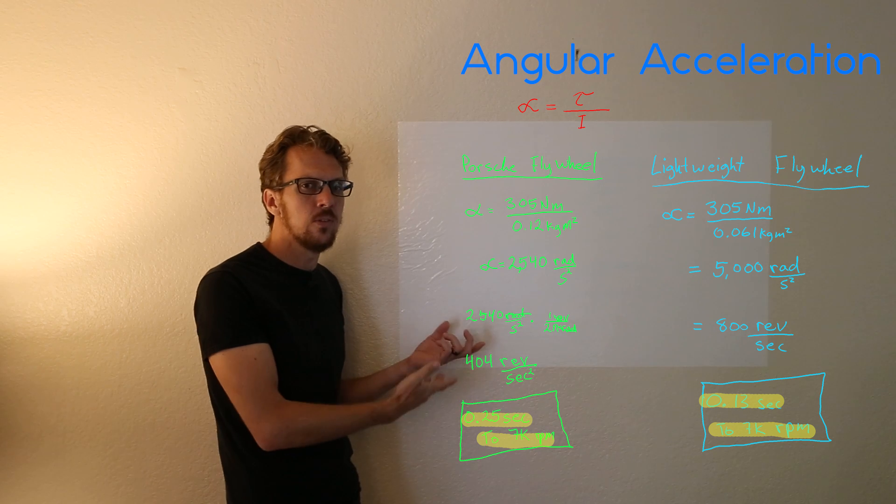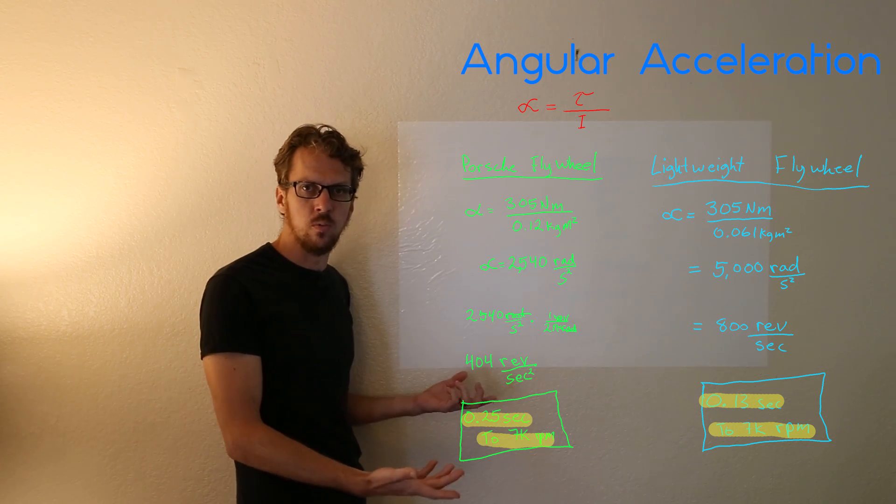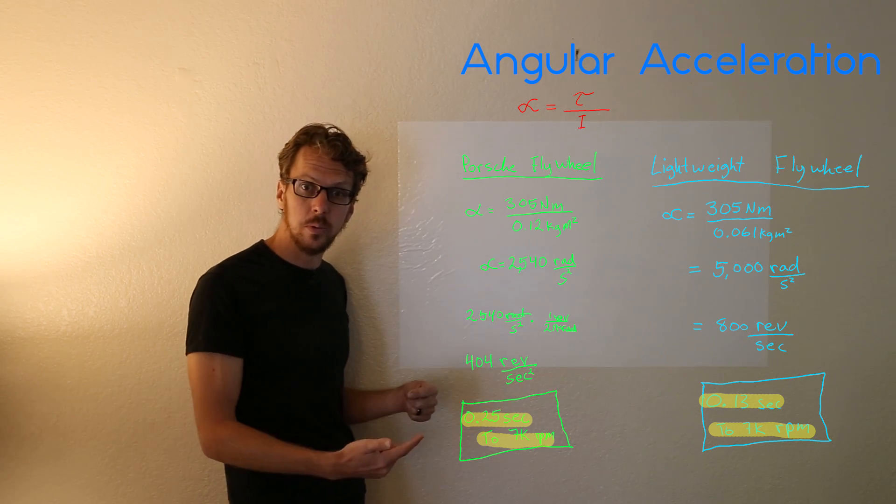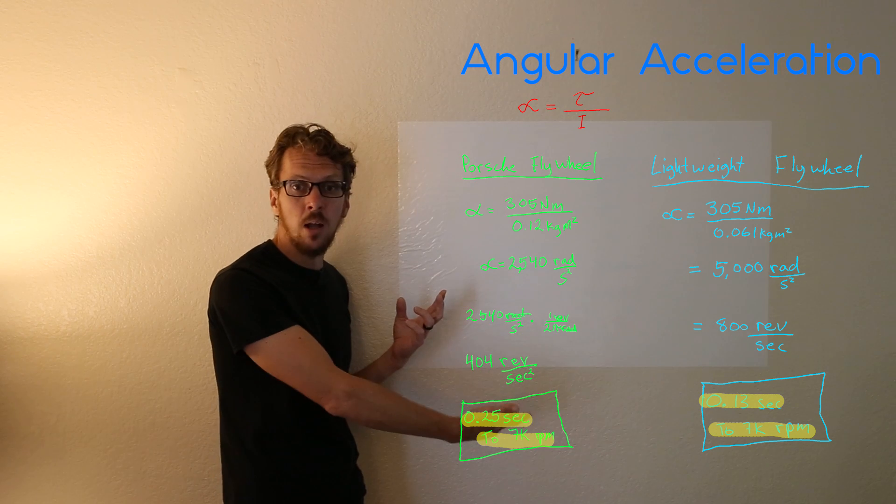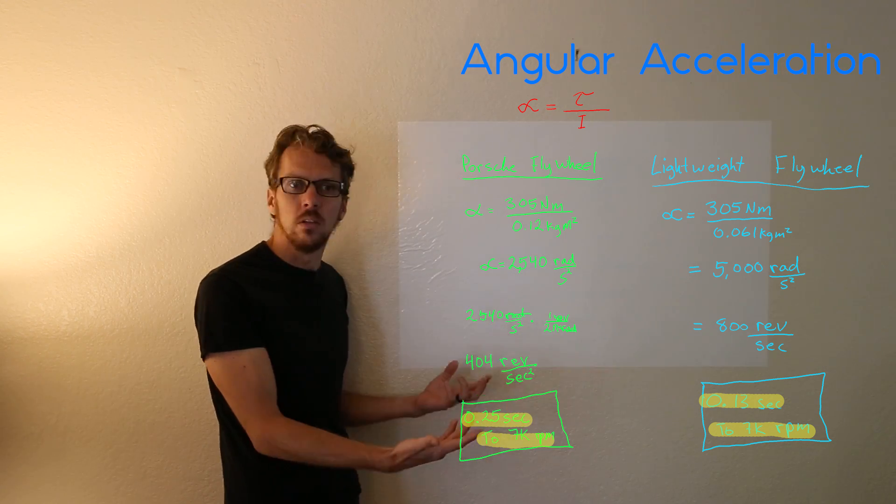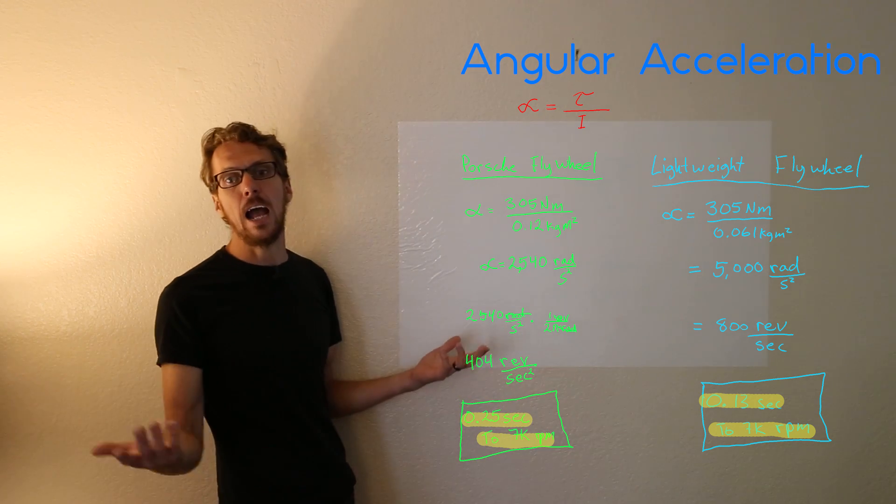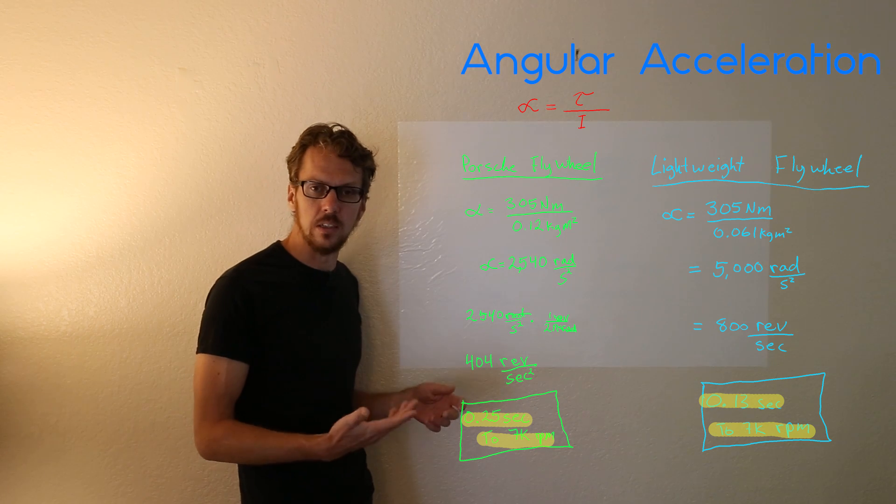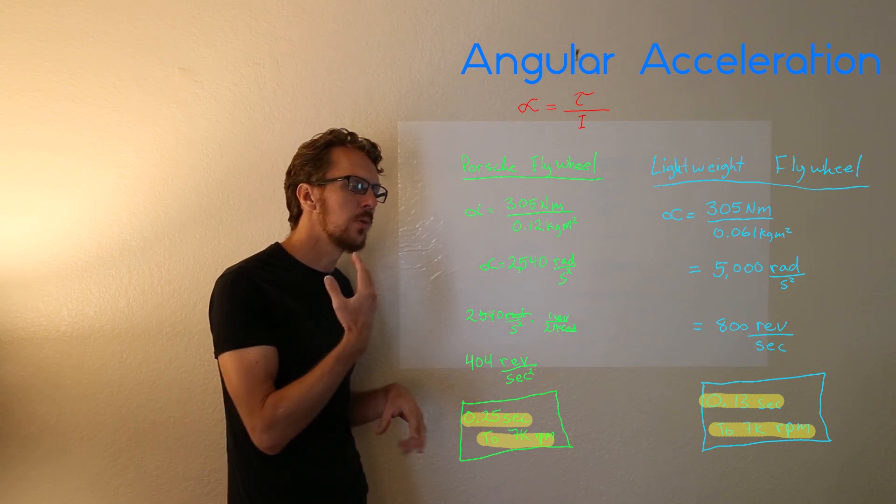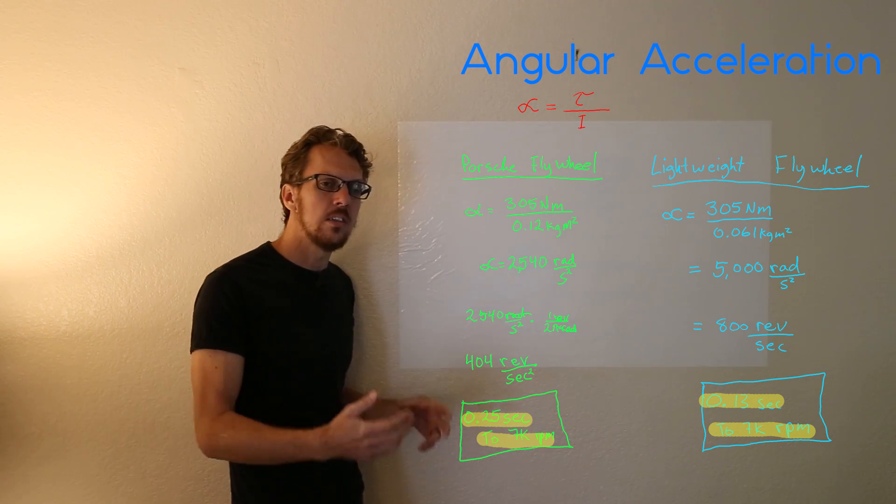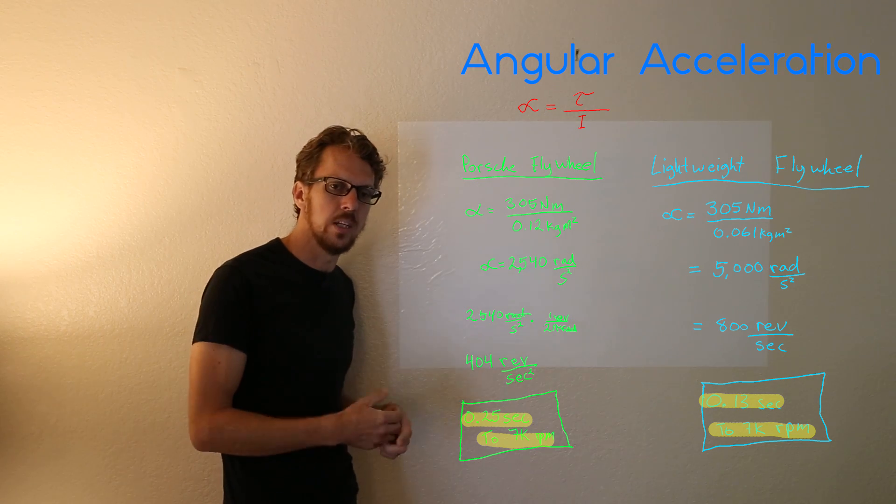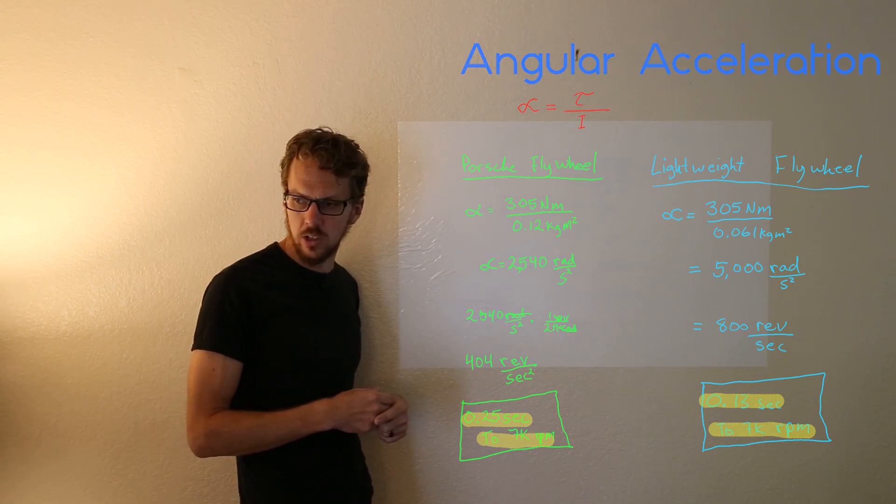Now in reality the flywheels are only a small portion of what you're spooling up. So these numbers do not mean that the car is going to be half as fast or something ridiculous like that. It's just an example of how the Porsche flywheel takes a little bit longer to spin up because it has greater inertia.